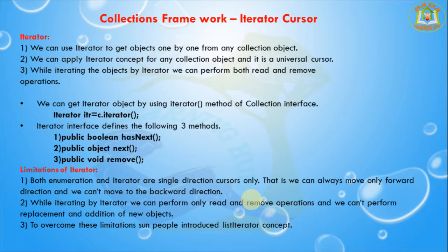Iterator also has some limitations. Both Enumeration and Iterator are single-direction cursors — there is no ability to iterate in multiple directions. We can only move in the forward direction and cannot move in the backward direction. While iterating by Iterator, we can perform only read and remove operations — we cannot perform any replacement or addition of new objects. To overcome these limitations, ListIterator was introduced.